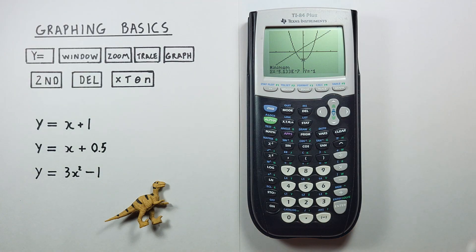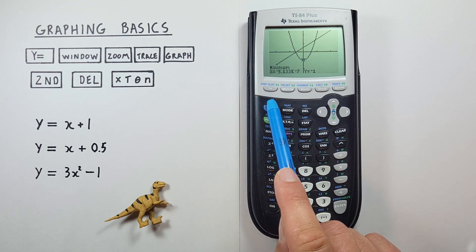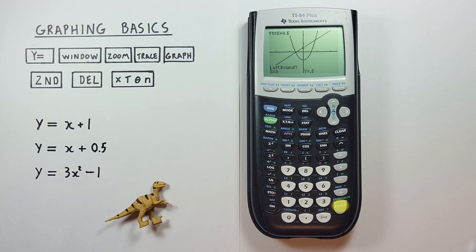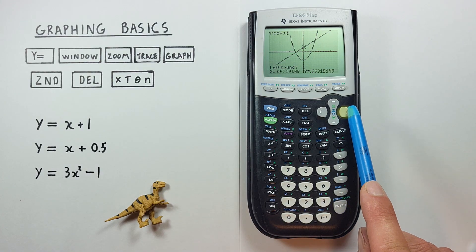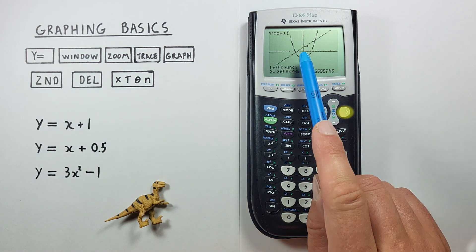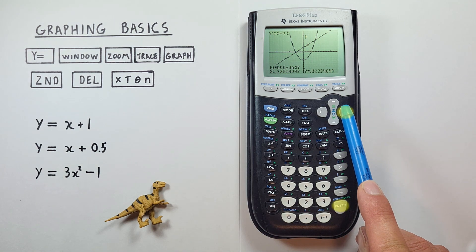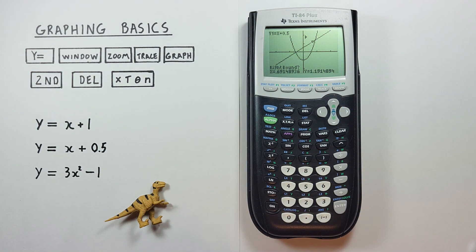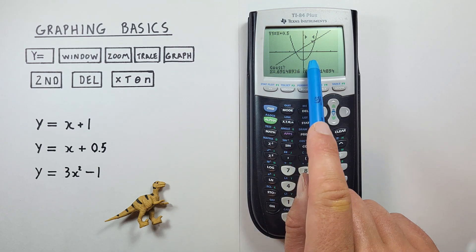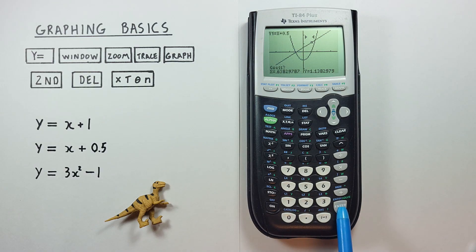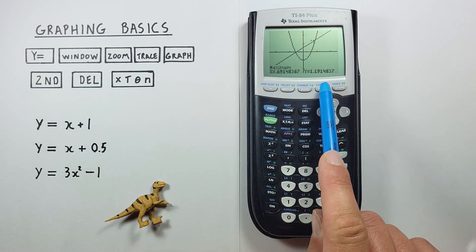If we want to find a maximum value, we go about the same way: second trace, select number four — maximum. It'll ask us for a left and right bound value. We'll start here with our left, scroll up, and choose our right. Since we know it'll be on the far right, we'll just leave our cursor there, hit enter, and it gives us our maximum value between those two points.